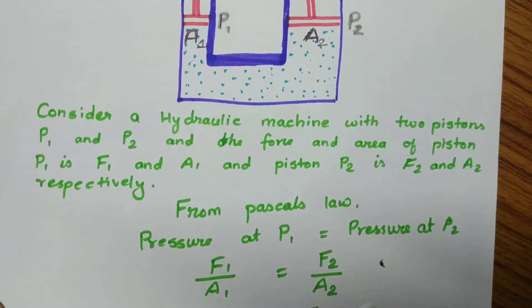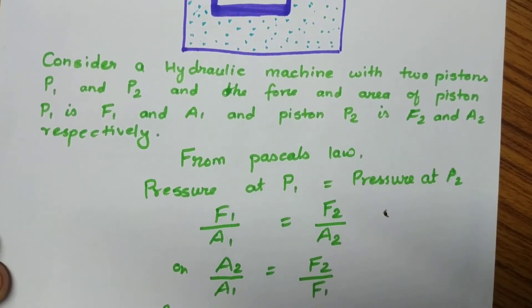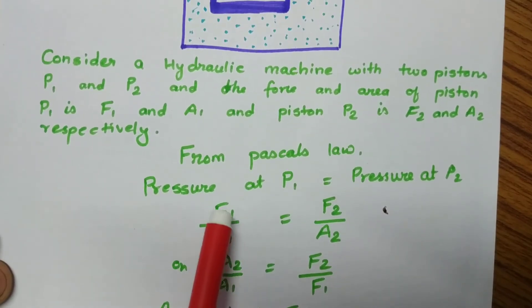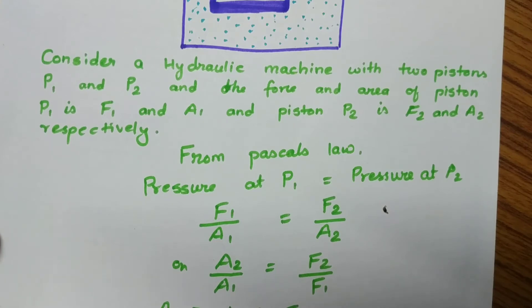If you make a slight correction to this statement, rearranging the terms, we can get A2 by A1 equals F2 by F1. This is our main equation from which we can conclude something.